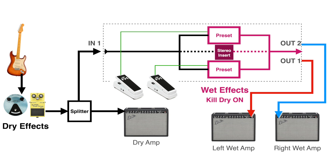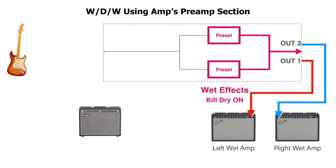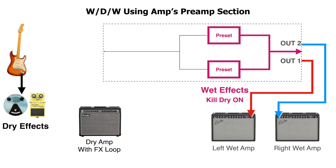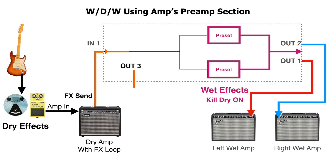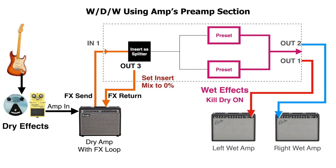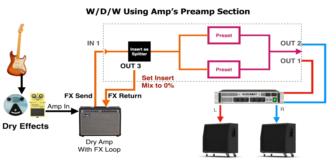In wet/dry rigs where we prefer to use the dry amp's preamp section for its tone, connect the guitar to the dry amp's input, from the amp's effect send connect to in 1 of the H90, and from out 3 connect back to the amp's effects return. We can use insert 1 as a splitter as long as its insert mix is set to 0. The advantage is we get to use the preamp section to shape our tone and pass it on to the wet effects chain — this sounds better when the wet effects chain goes directly to a power amp without any tone shaping capabilities.